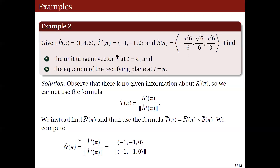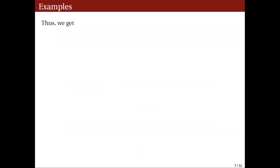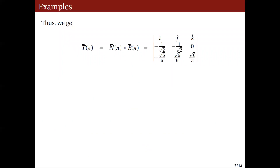We compute N(φ) = T'(φ) / |T'(φ)| = (−1, −1, 0) / √2 = (−1/√2, −1/√2, 0). Then T(φ) = N(φ) × B(φ), computed via the determinant, giving T(φ) = (−√3/3, −√3/3, −√3/3) as the unit tangent vector.